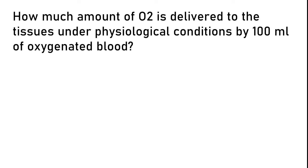How much O2 is delivered to the tissue under physiological conditions by 100 ml of oxygenated blood? (A) 5 ml, (B) 25 ml, (C) 50 ml, (D) more than 50 ml. The correct answer is option A: 5 ml.